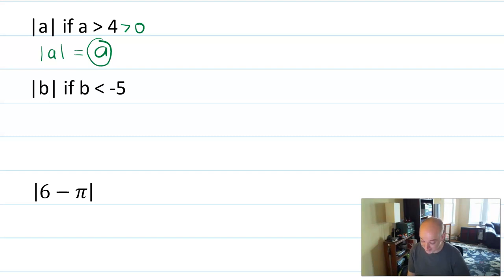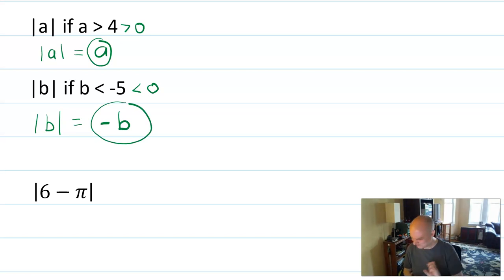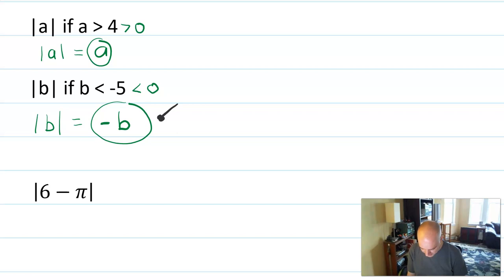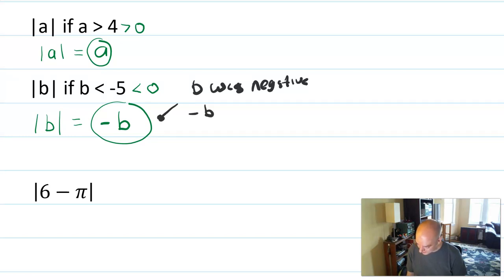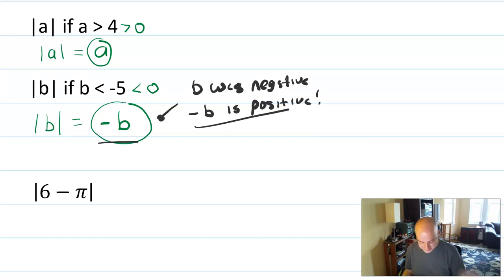What about absolute value of b, if b is less than negative five? That's definitely less than zero, so I'm definitely going to use the idea that absolute value of b equals opposite b — that would be my answer. It's a little weird because absolute value can't be negative, but remember: since b was negative, negative b is positive. And that's how we work with the idea of absolute value of variables and unknown things.